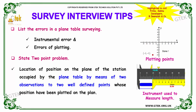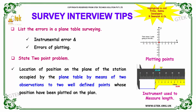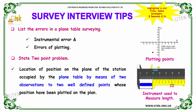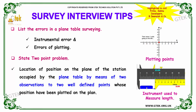Our next question is: state the two point problem. The two point problem is the location of the position on the plan of the station occupied by the plane table by means of two observations to two well-defined points whose positions on the plan are known.